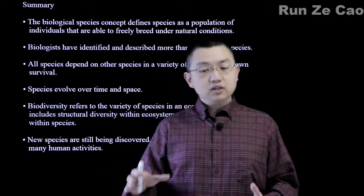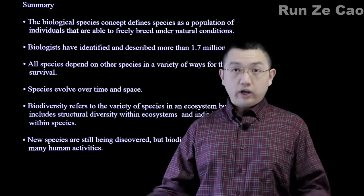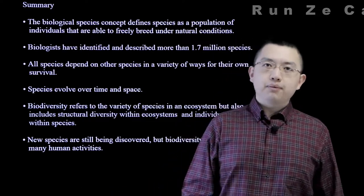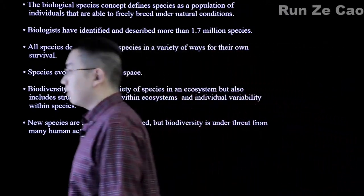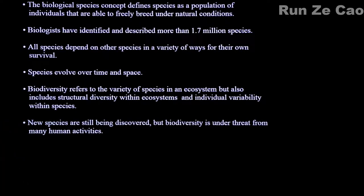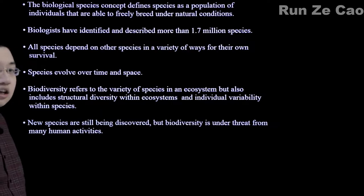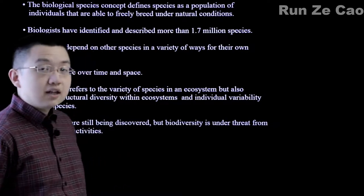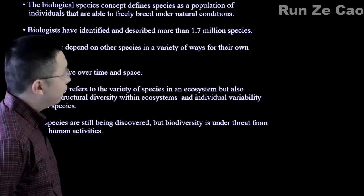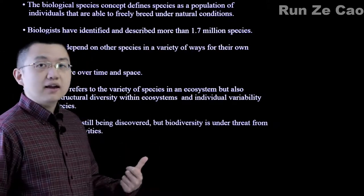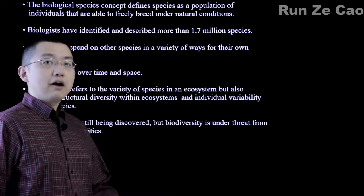Many villages or towns were quite isolated, essentially forming separate populations. Biologists have identified and described more than 1.7 million species — probably more like 2 million or so now — and there's an estimated anywhere from 10 million to billions of species on earth. Some species like bacteria or certain fungi with no identified sexual stage are hard to categorize, but for the most part we use the biological species concept rather than morphological or biochemical.